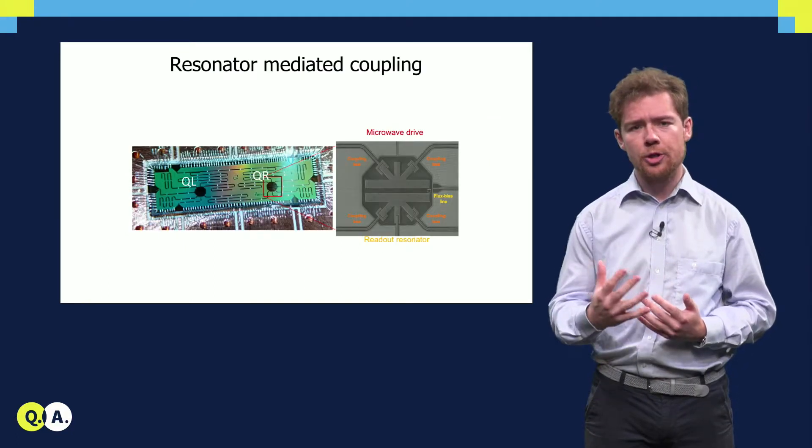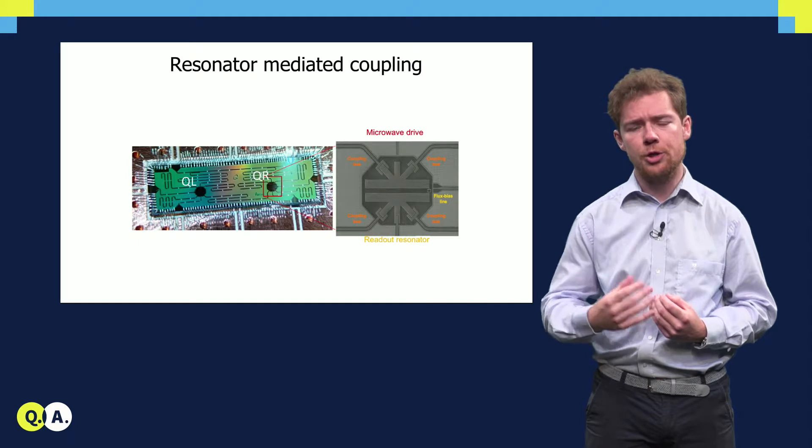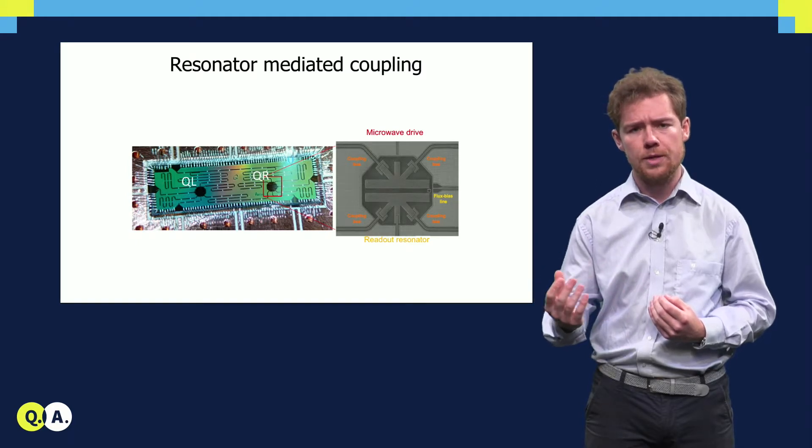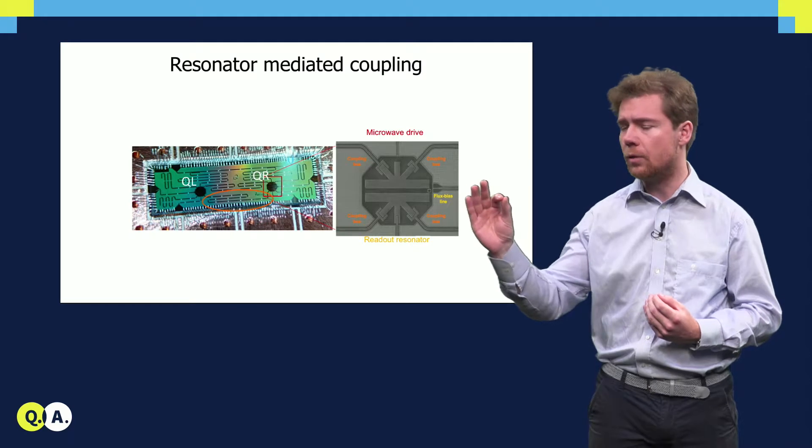In superconducting transmon qubits, two-qubit gates are based on a transversal qubit-qubit coupling. This coupling is mediated through a coupling resonator.